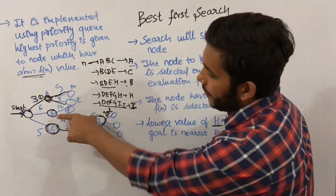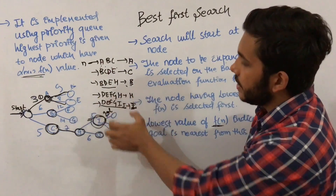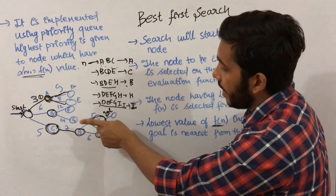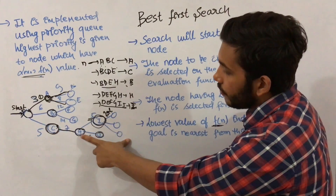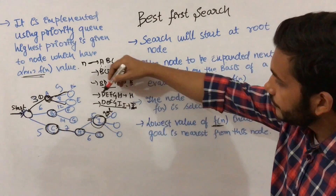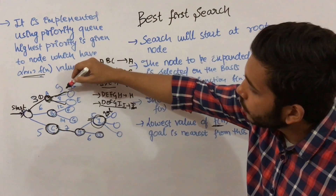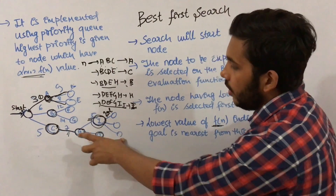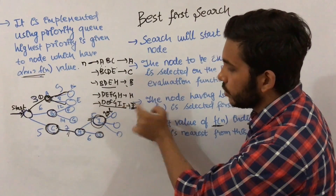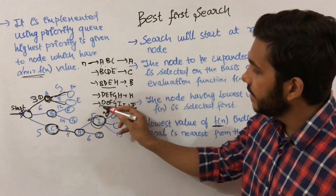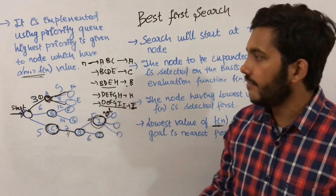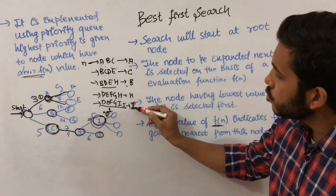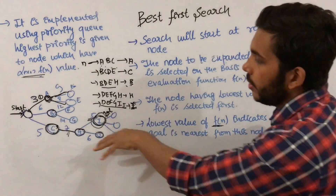Once B is expanded, its child nodes F and G are added to the list. The open list now contains D, E, F, G, and H. The lowest value among these is H at 7, so H is chosen. Once H is expanded, nodes I and J are added. From the remaining list D, E, F, G, I, J, node I has the lowest value with cost 5, so I is chosen and we reach the goal node.